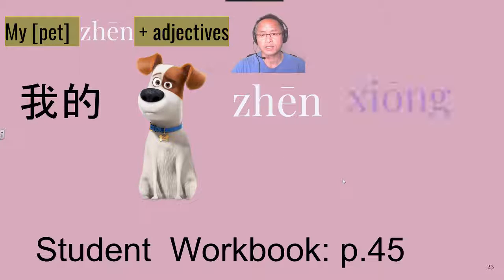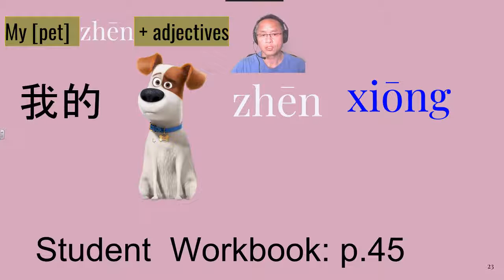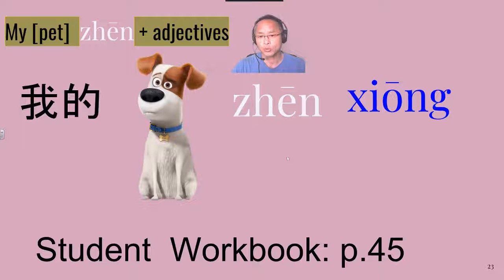And our last one: 我的狗真凶 (wǒde gǒu zhēn xiōng). 我的狗真凶 — My dog is really ferocious. Don't forget you can change 真 (zhēn) for 很 (hěn), or even the negative 不 (bù), and then put the adjective or description word there.